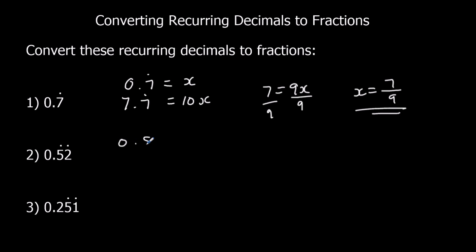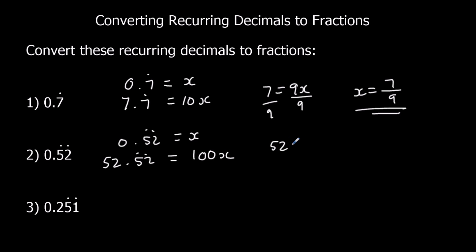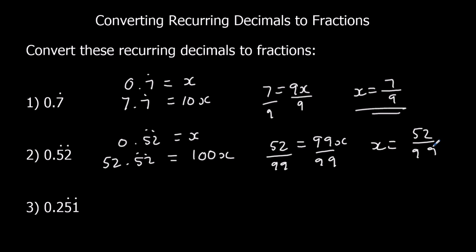0.52 recurring is x. 52.52 recurring is 100x. So 52 equals 99x. Taking away the top one from the bottom one, divide both sides by 99: x equals 52 over 99.